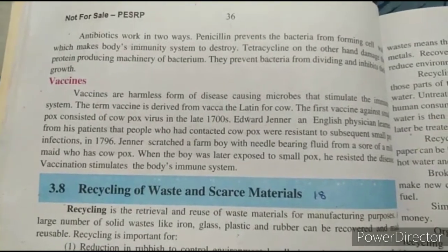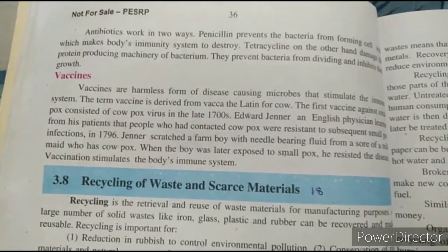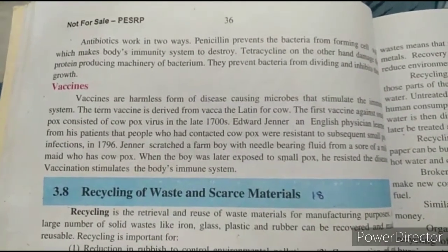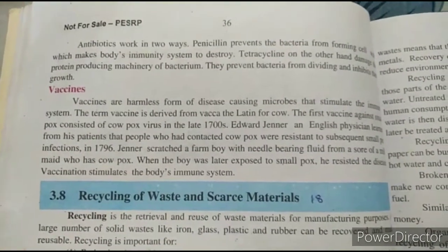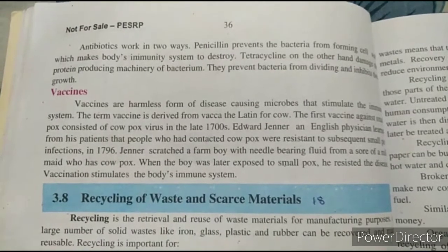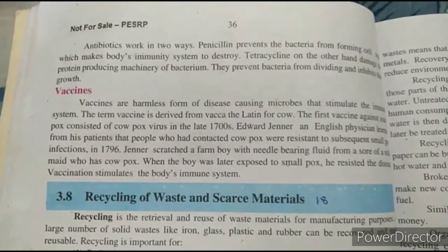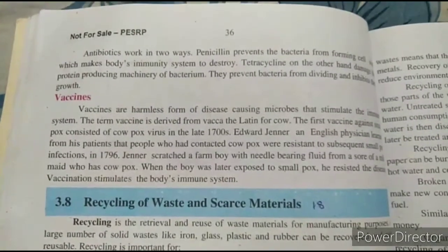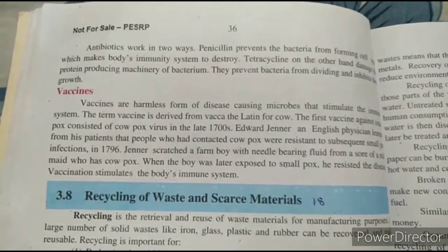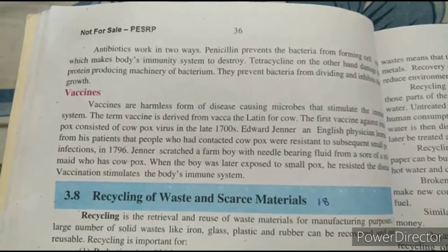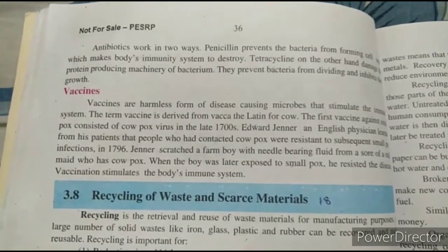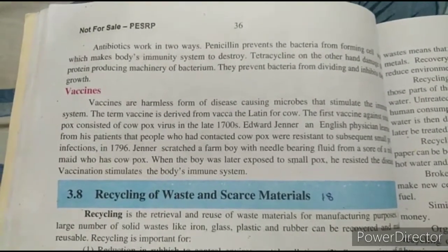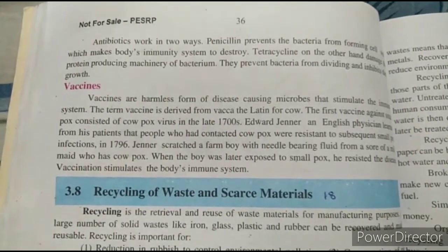Vaccines are a harmless form of disease-causing microbes that stimulate the immune system. These microbes — bacteria or viruses — are in a harmless form so they cannot cause infection, but they can be injected into the body to stimulate the immune system.